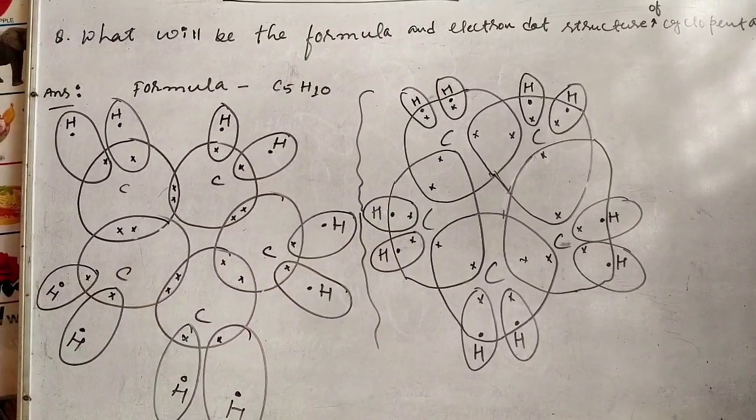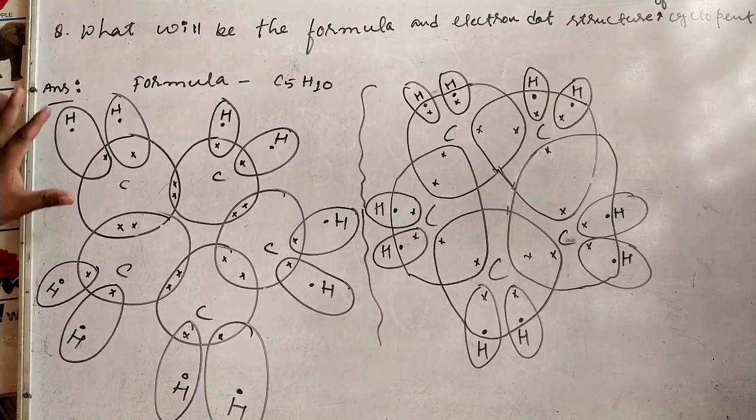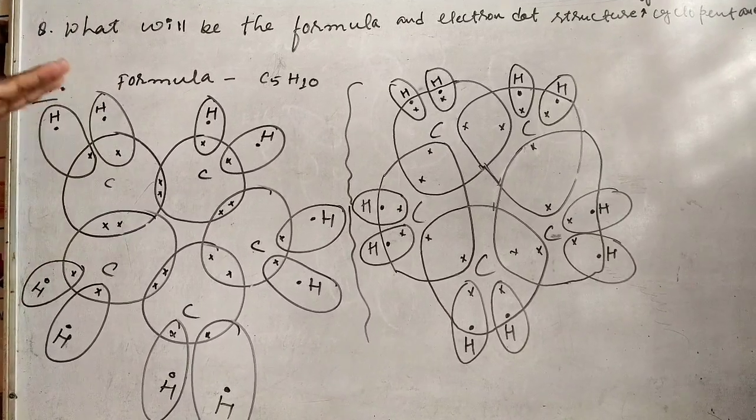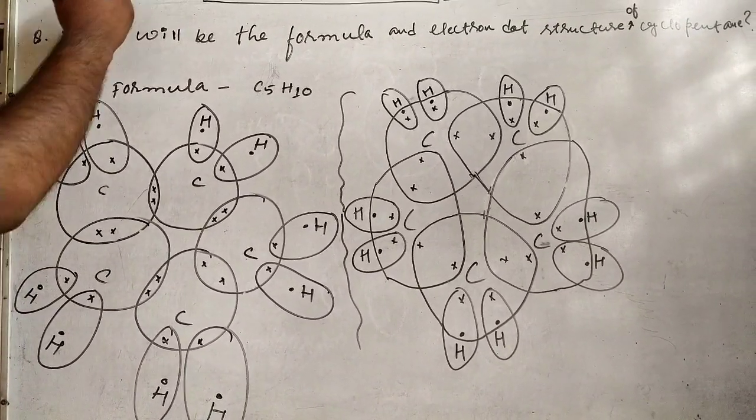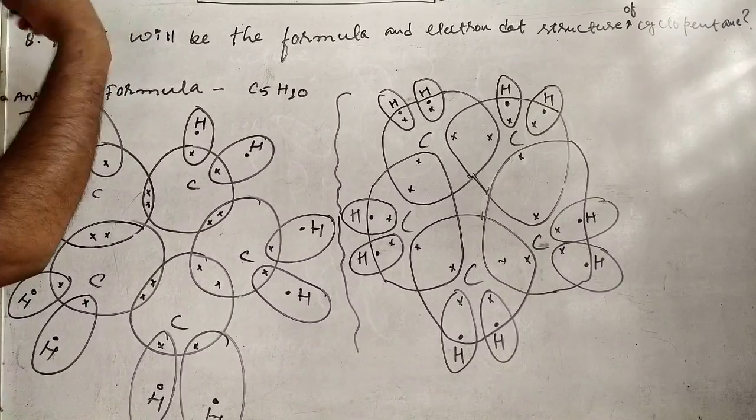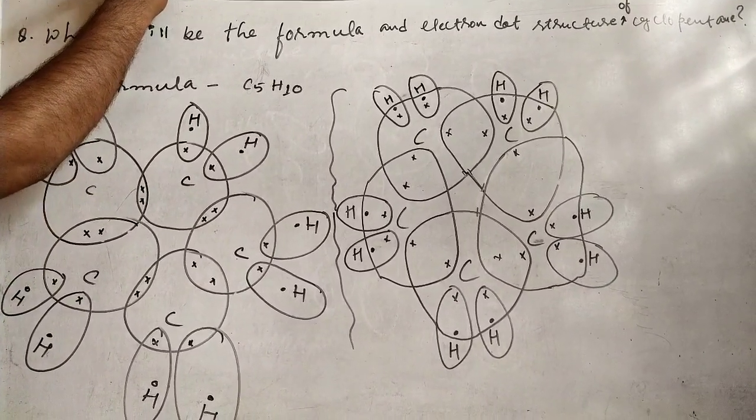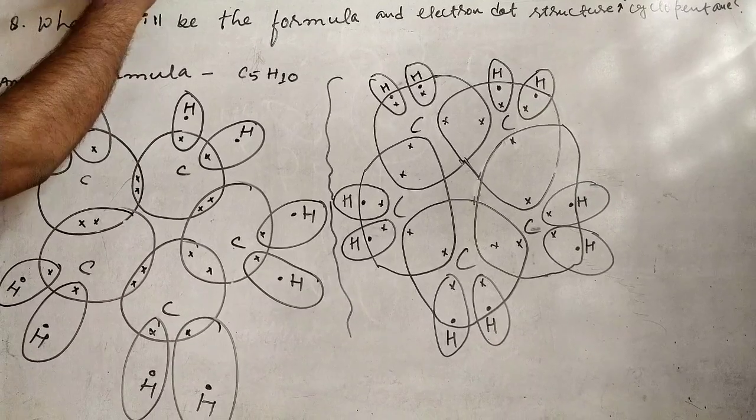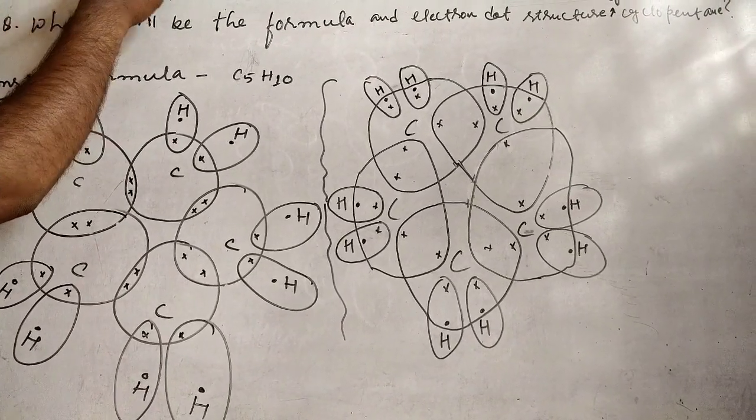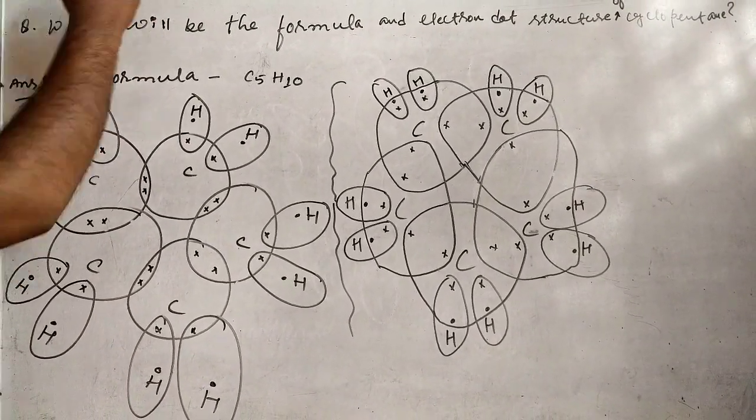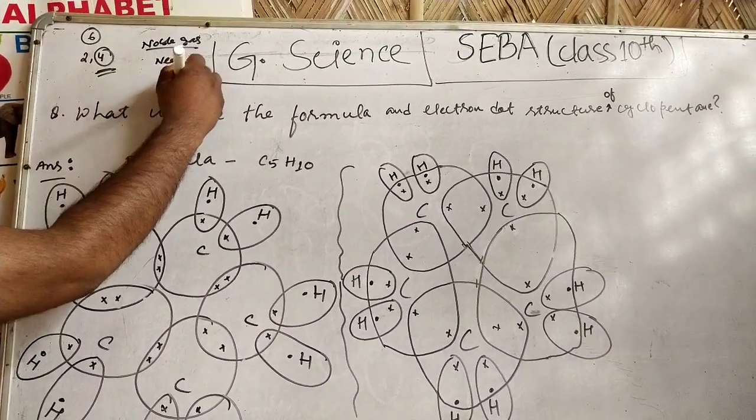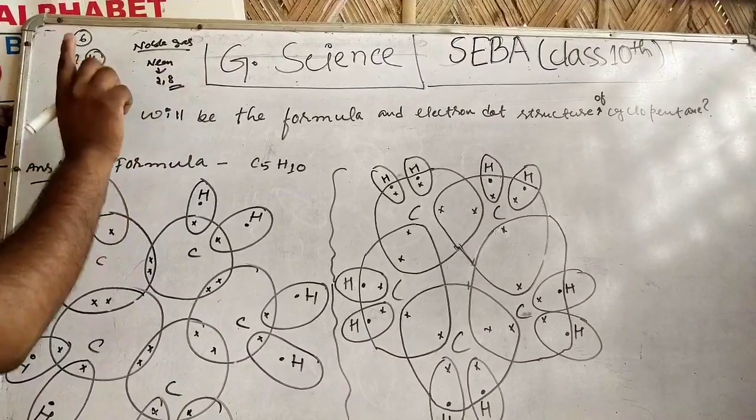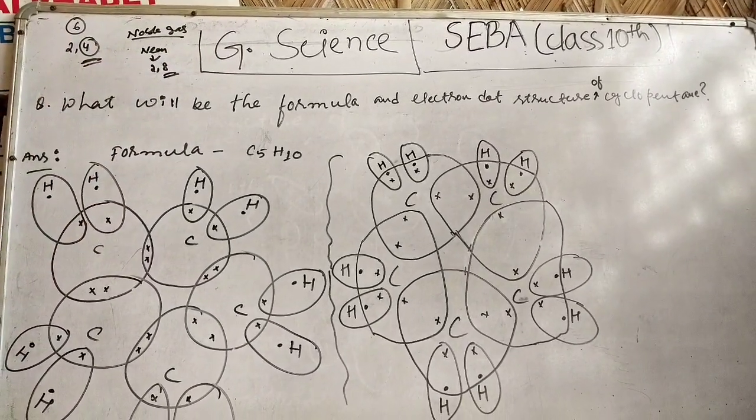The first circle is five circles. So carbon actually needs noble gas configuration - noble gas. Helium, neon - what is the configuration of neon? Two, eight. Two, eight. So carbon needs four electrons.